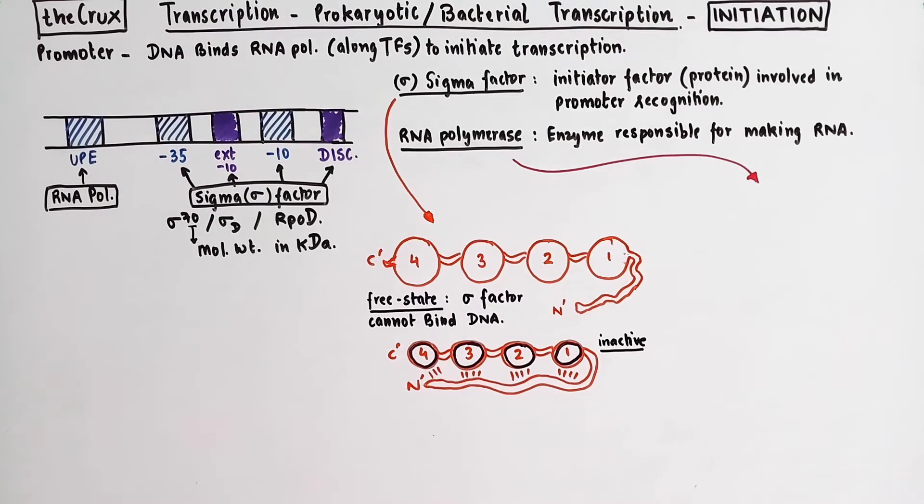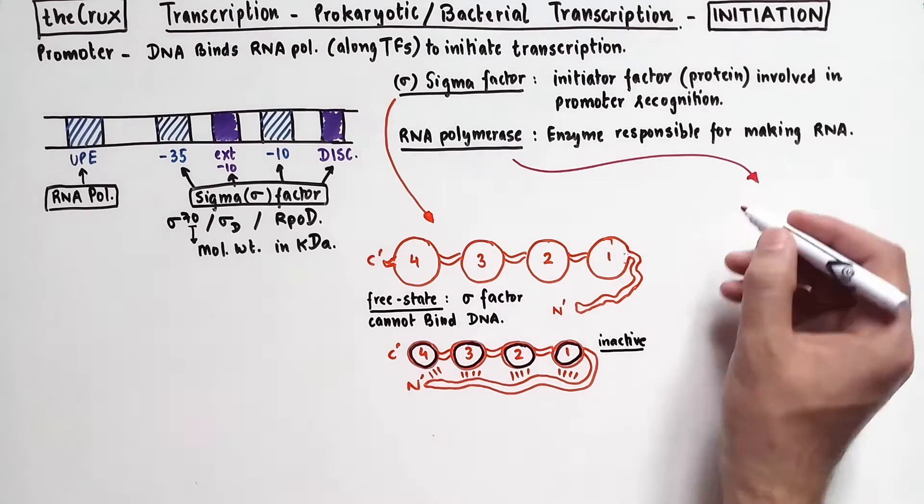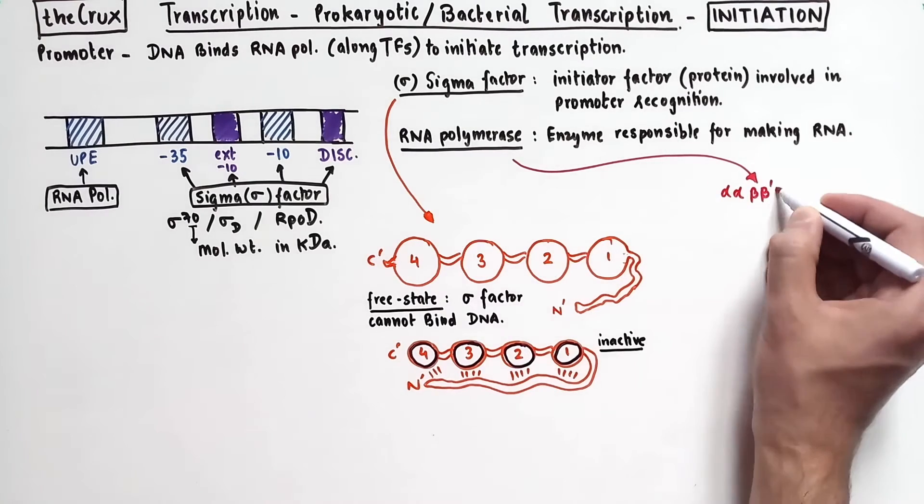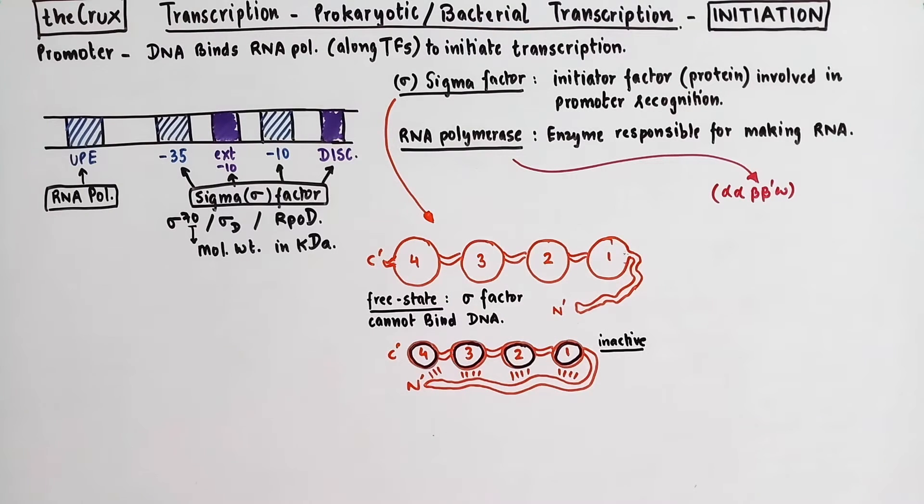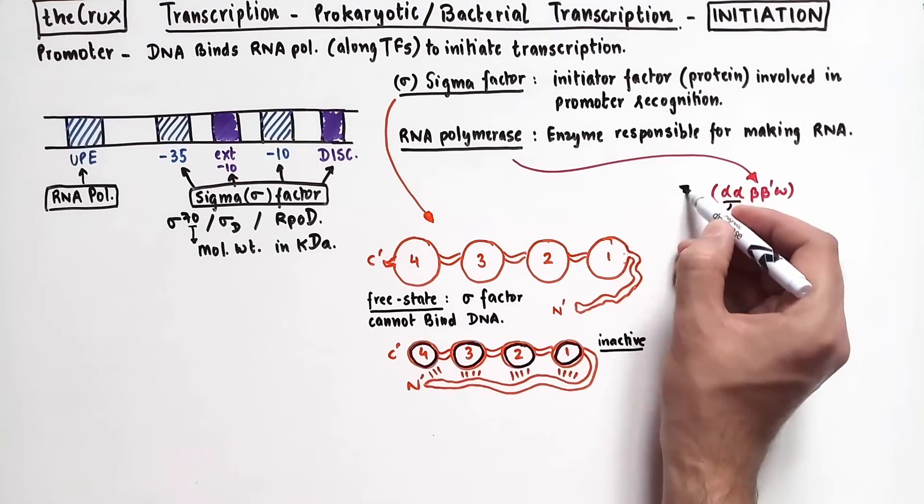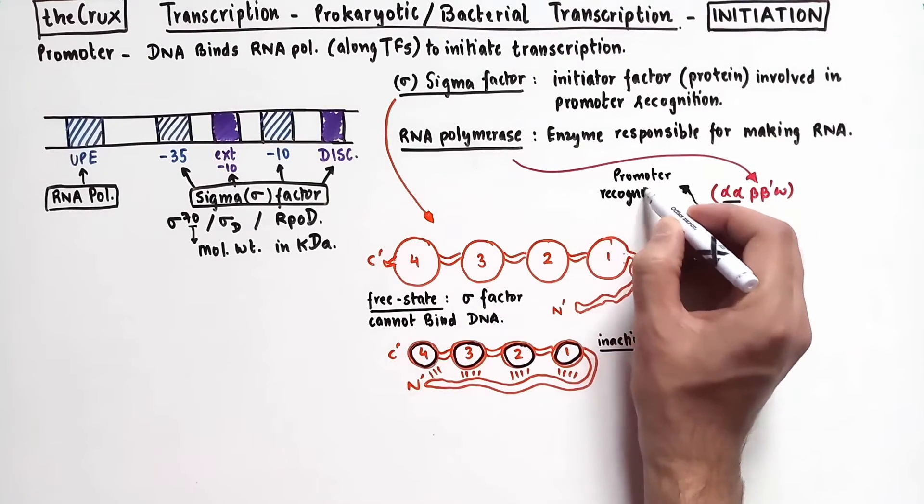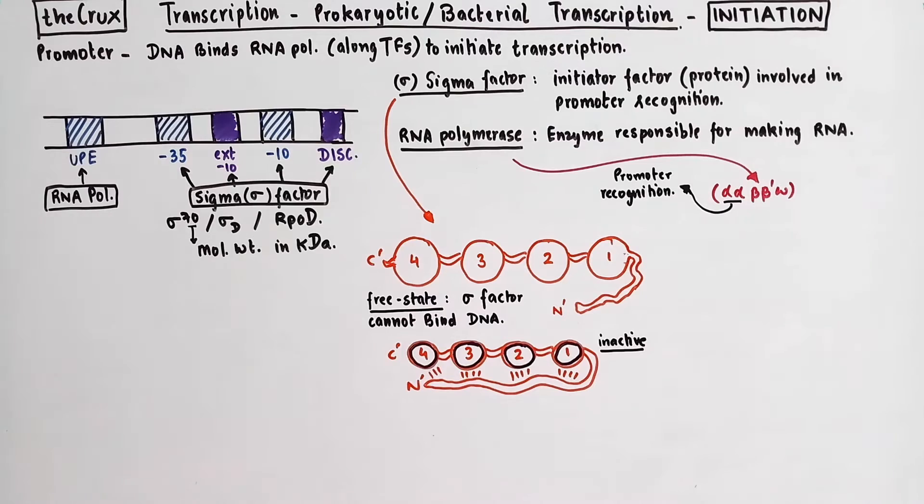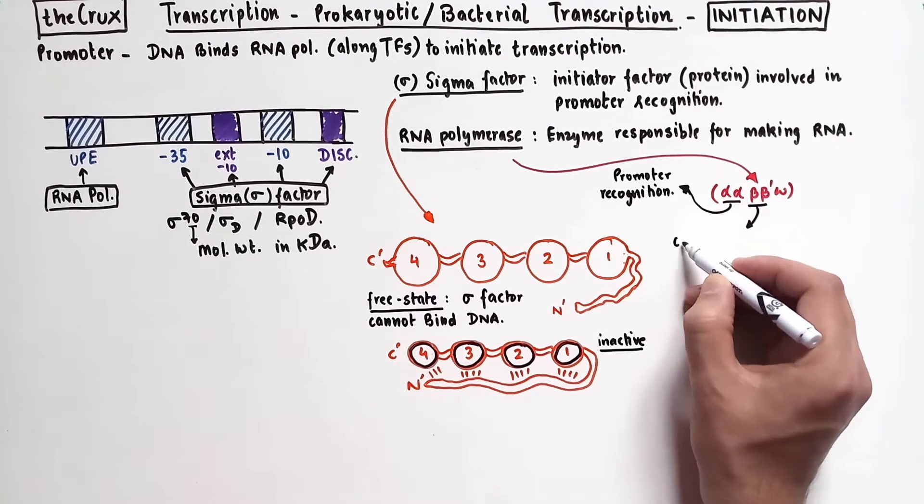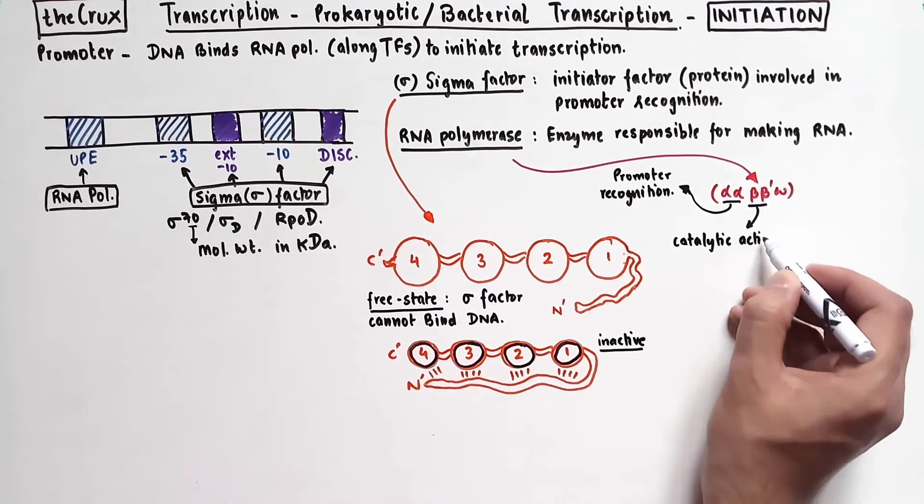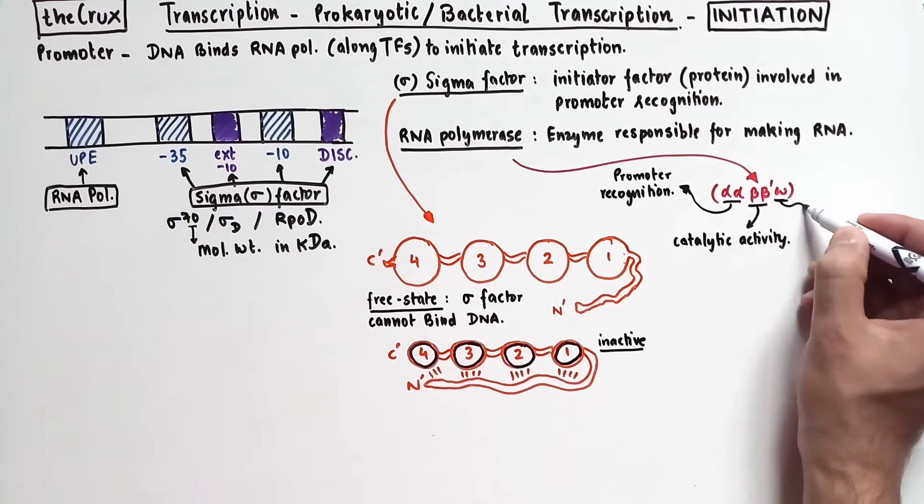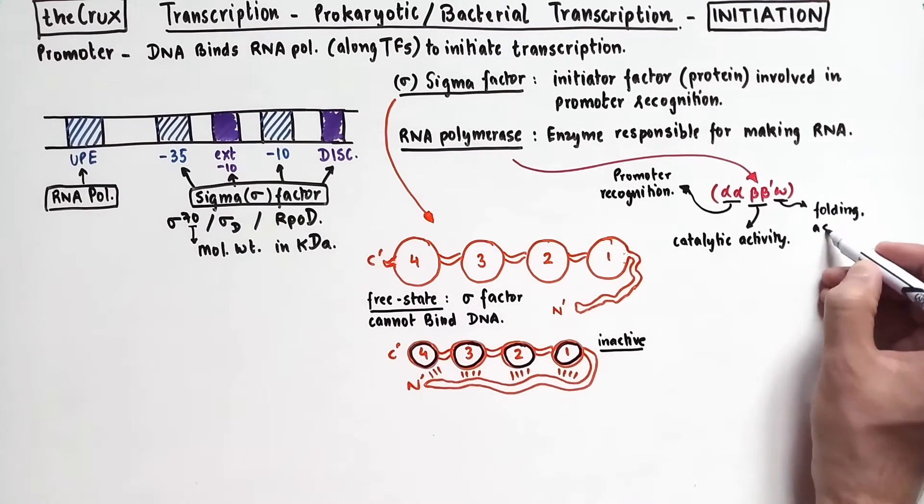Now looking at the RNA polymerase, we see that it is made up of two alpha subunits, a beta and a beta prime subunit, and one omega subunit. The alpha subunits are involved in the promoter recognition, which we will see in a moment. The beta and the beta prime together give rise to the catalytic activity of the enzyme, whereas the omega helps in the polymerase folding, assembly, and some regulation.